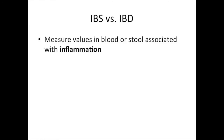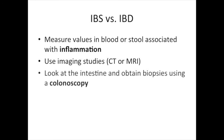It can be difficult to tell the difference between IBS and IBD, but we do have some tools. First, we can measure certain values in your blood or stool that are associated with inflammation. Second, we can use imaging studies such as CT or MRI. Third, we can directly look at the intestine and obtain biopsies with a colonoscopy. Generally speaking, symptoms of diarrhea or constipation and abdominal pain may be due to IBS if these studies are all normal and show no evidence of inflammation.